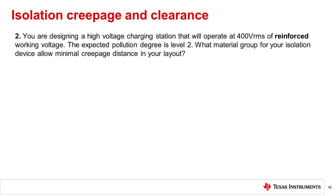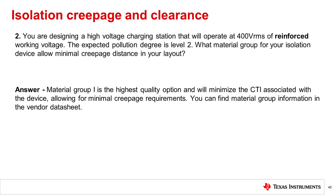Question 2: You are designing a high-voltage charging station that will operate at 400 volts RMS of reinforced working voltage. The expected pollution degree is level 2. What material group for your isolation device will allow minimal creepage distance in your layout? Answer: Material group 1 is the highest quality option and will minimize CTI associated with the device, allowing for minimal creepage requirements. You can find material group information in the vendor datasheet.